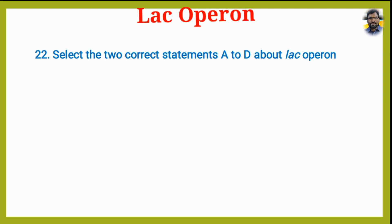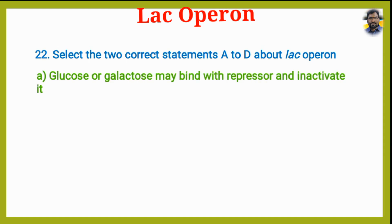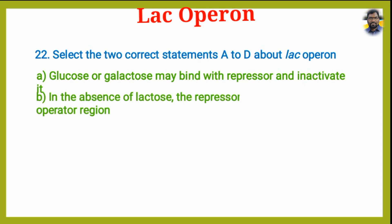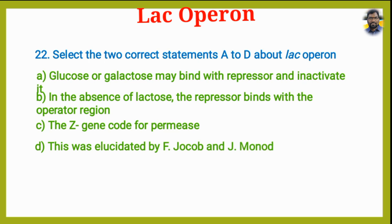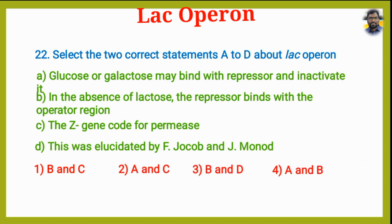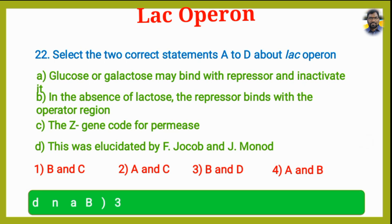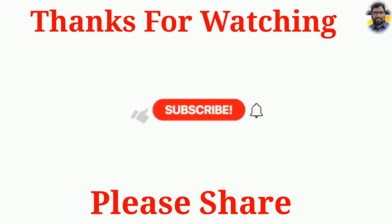Select the two correct statements A to D about the Lac Operon. Statement A: Glucose or galactose may bind with repressor and inactivate it. Statement B: In the absence of lactose, the repressor binds with the operator region. Statement C: The Z gene codes for permease. Statement D: This was elucidated by F. Jacob and J. Monod. Options: B and C correct; A and C correct; B and D correct; A and B correct. The answer is B and D are correct.